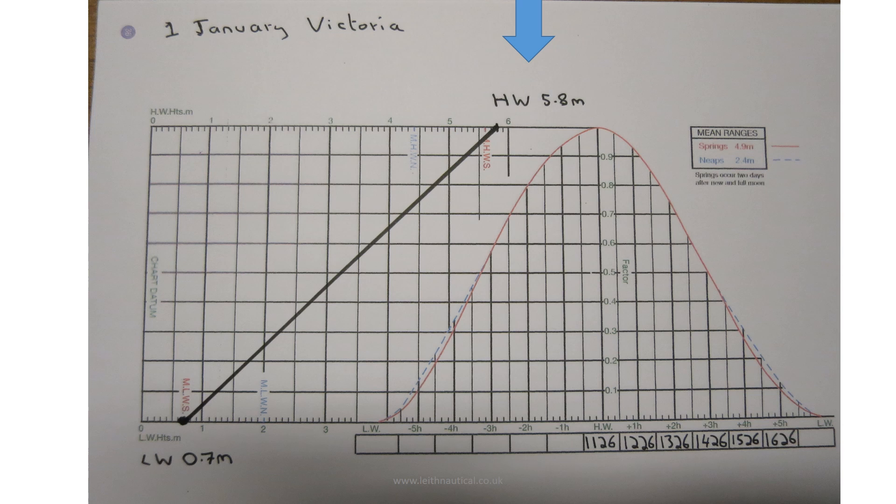Along the top of the graph we can mark the height of high water, in this case 5.8 metres. And on the bottom of the graph we can mark the height of tide at low water, in this case 0.7 metres. Now we join a line between our high water and our low water.